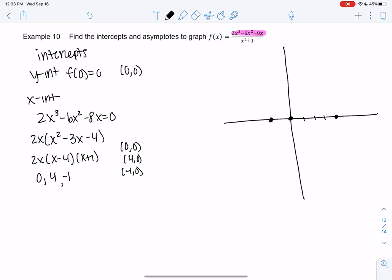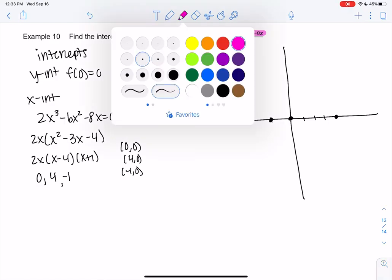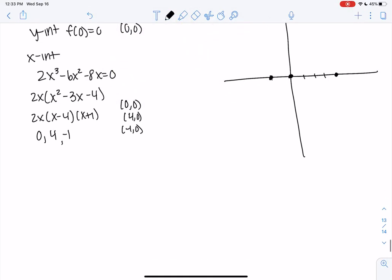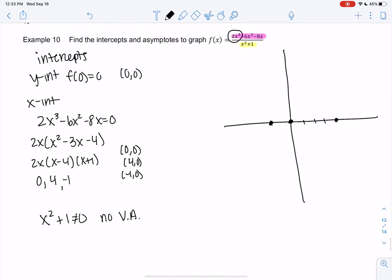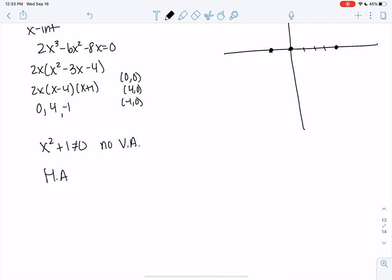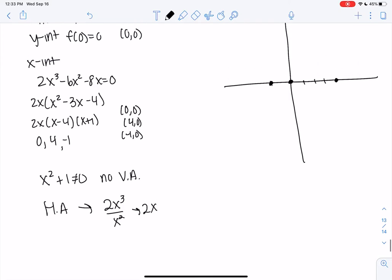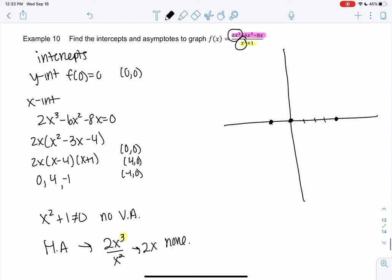And then let's do asymptotes. So are there any vertical asymptotes? Does the denominator ever equal 0? Nope. x² plus 1 is never 0. So no vertical asymptotes. Horizontal asymptotes. So we take leading terms which goes to 2x, which goes to infinity, right? When the top power is bigger, there is none. So none.